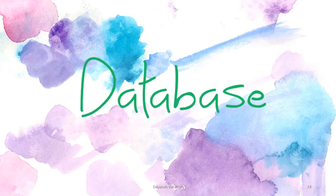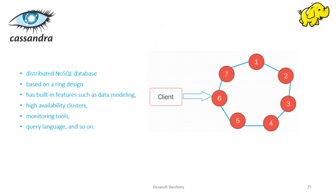Welcome back to the lecture. In this lecture we will discuss database on Cloudera Enterprise, specifically Apache Cassandra. Apache Cassandra architecture is a distributed NoSQL database management system known for its ability to scale, perform, and offer continuous uptime.